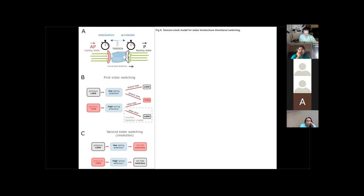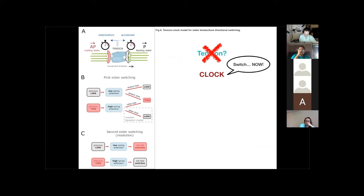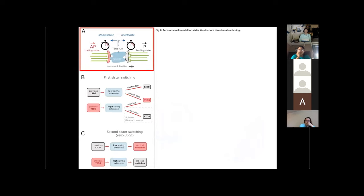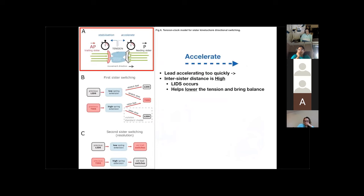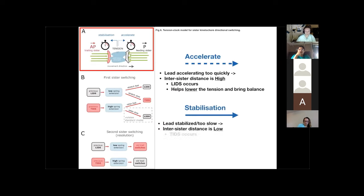Figure six lays out their proposition for a new model of kinetochore oscillation switching. Rather than tension between sisters being the key factor that causes the switch, there is a clock in place that tells the sisters when to switch. This clock is reliant on saving the process from catastrophe — if things are out of line, the clock triggers a switch to achieve balance; if forces level out, the clock allows oscillation to continue. In figure 6a, both sisters have a clock to coordinate switching. If the leading sister accelerates too quickly, it switches first because the tension is too high for a TIDS to add even more tension, preventing premature splitting and potential chromosome missegregation.